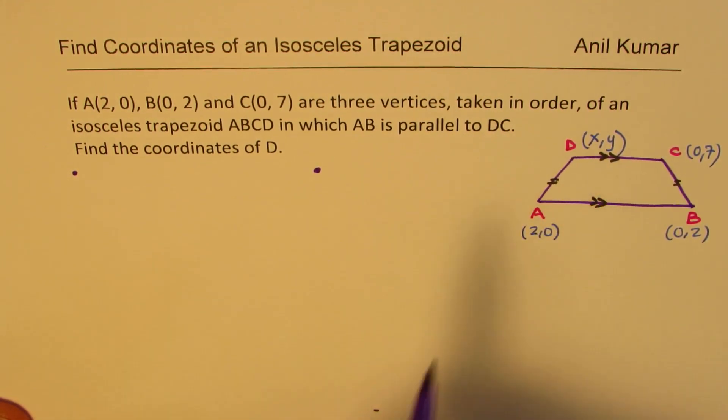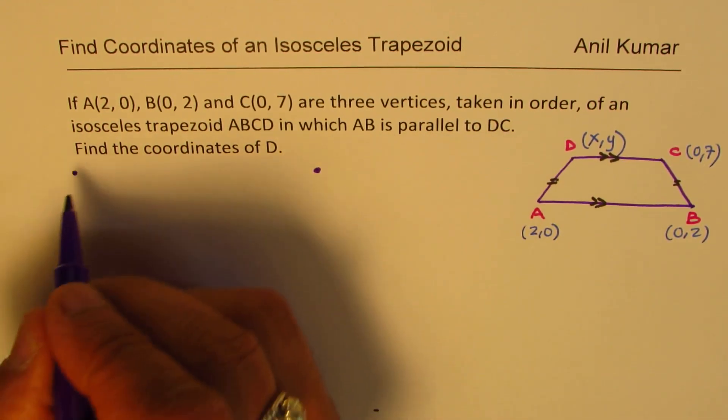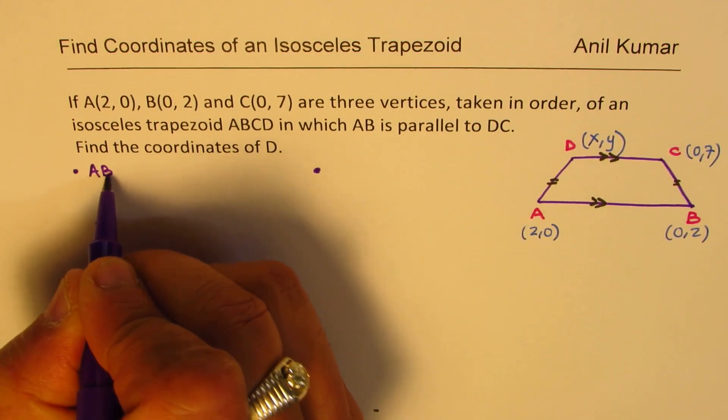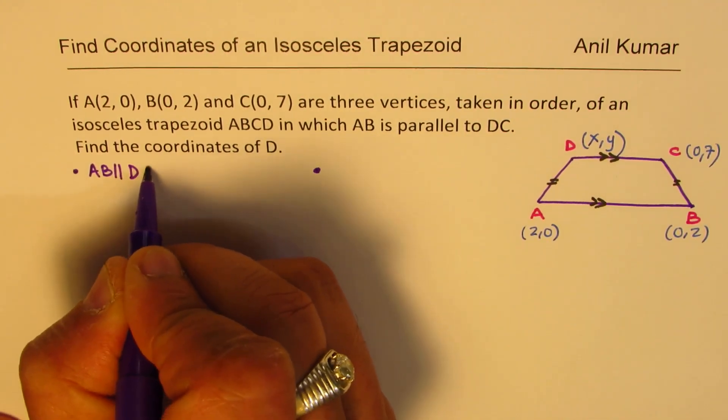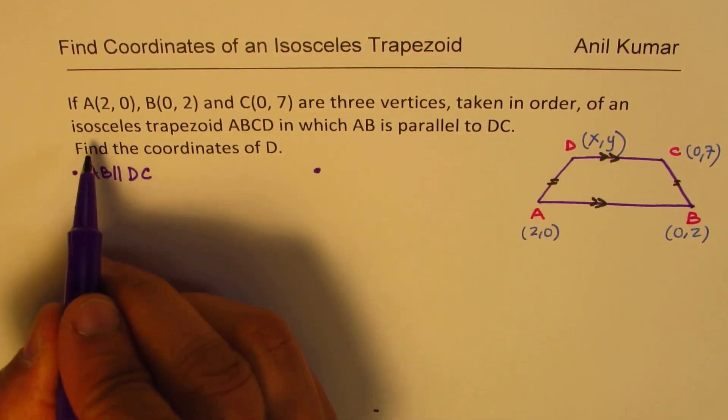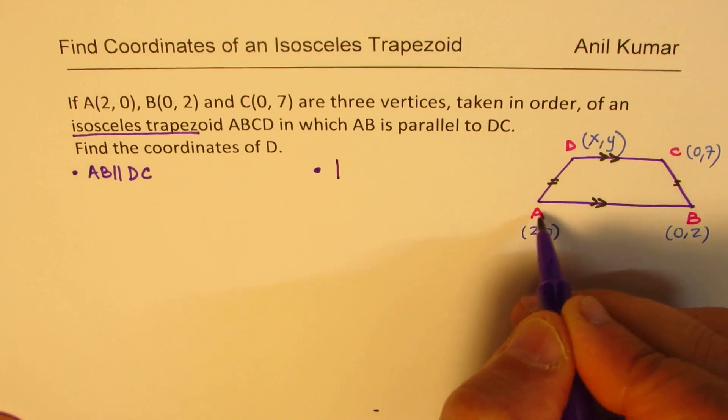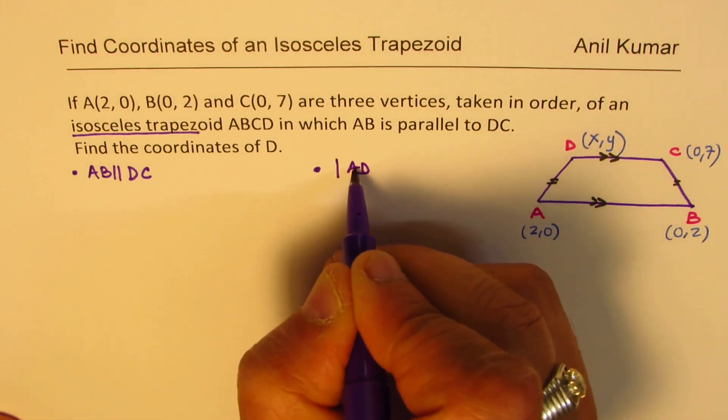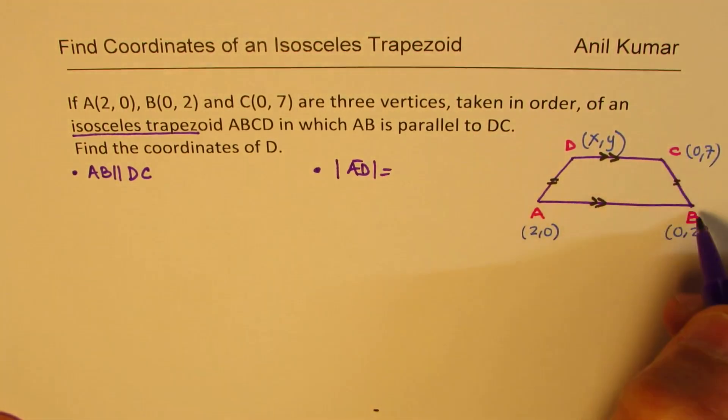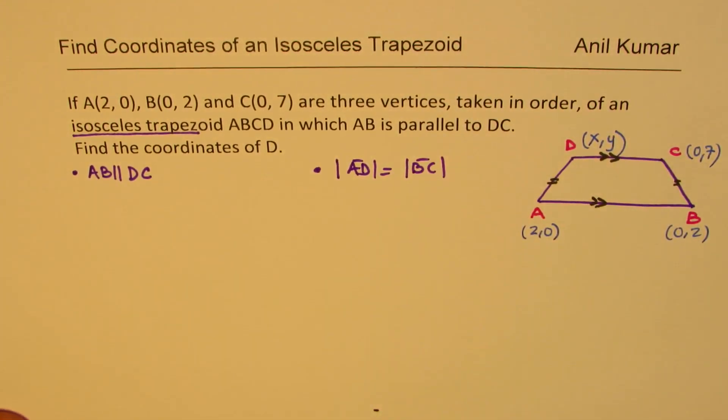One equation we'll get from the condition that AB is parallel to DC. So when you say AB is parallel to DC, so that is one condition. The other condition we get from isosceles trapezoid that is the magnitude of AD is equal to magnitude of BC. So we have two conditions, right?